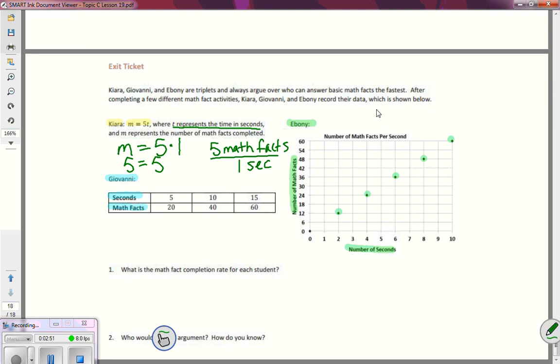Now, if I take a look at Ebony, Ebony's information is over here in the graph. And she's got everything charted out. And what I want to do is look for a unit rate. Now, the nice thing about a graph is these dots should form a straight line.